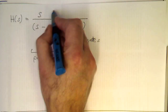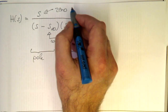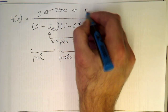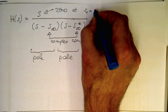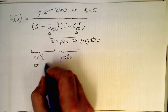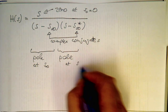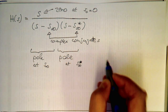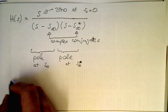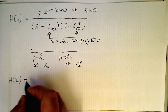This one is a zero, and this obviously turns zero at S_zero equals zero — so that's our zero here. That's a pole at S_∞ and a pole at S_∞ star. With that recipe, we can directly transform this into our digital filter using the matched Z-transform.